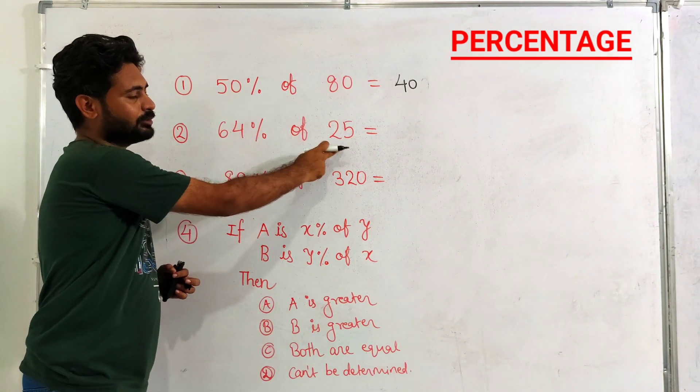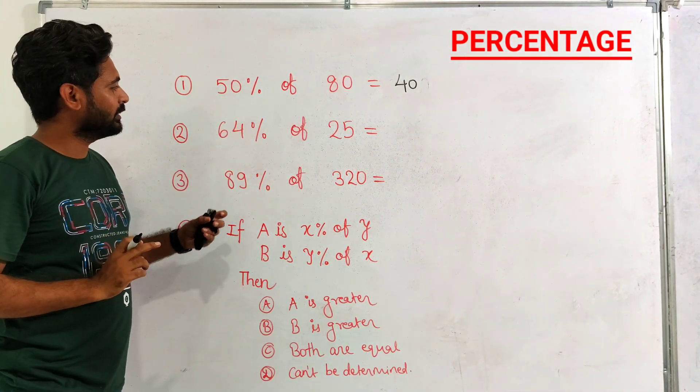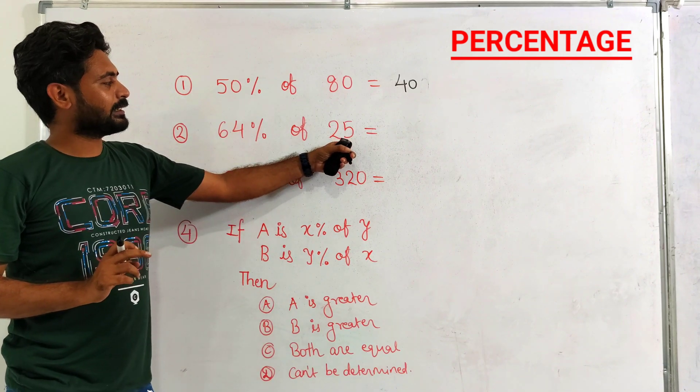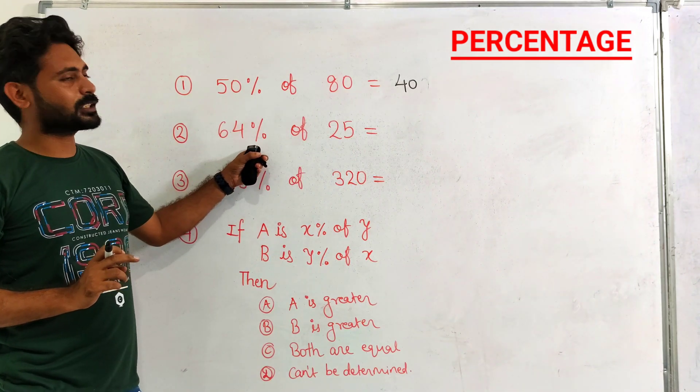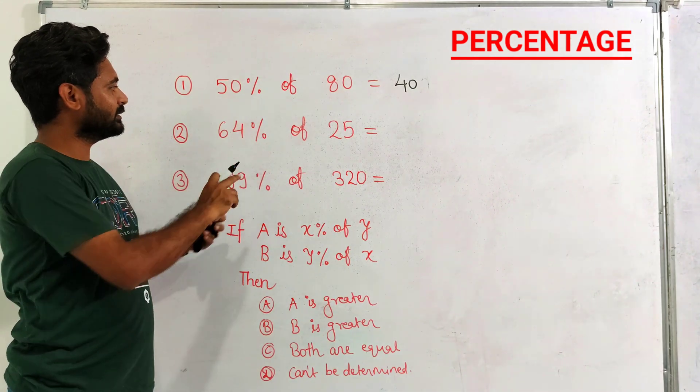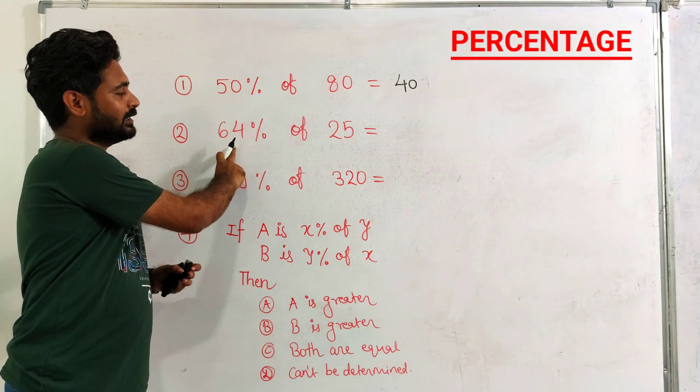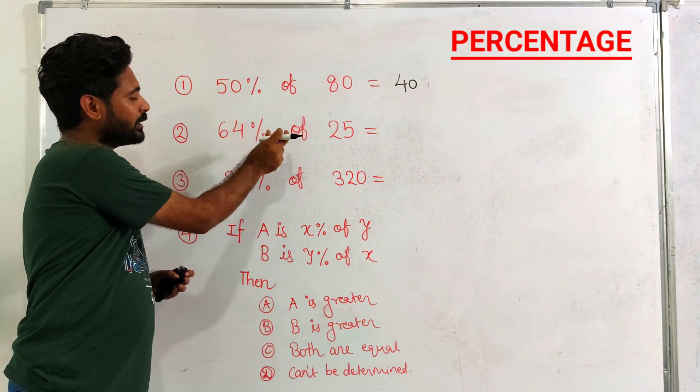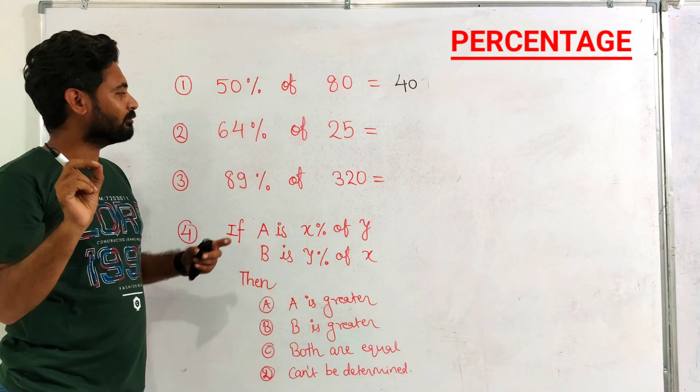Now we have 64% of 25. Can we interchange this? We can write 25% of 64. Now 25% means one-fourth. One-fourth of 64 is 16.